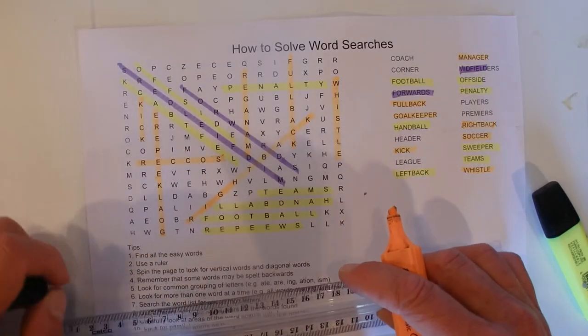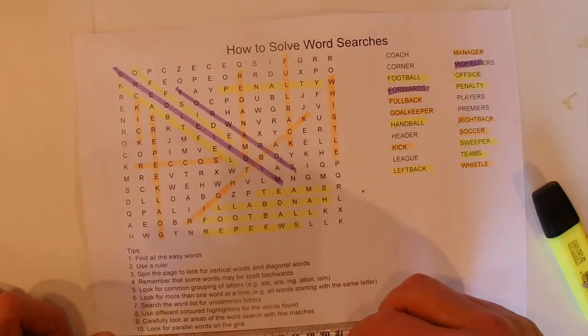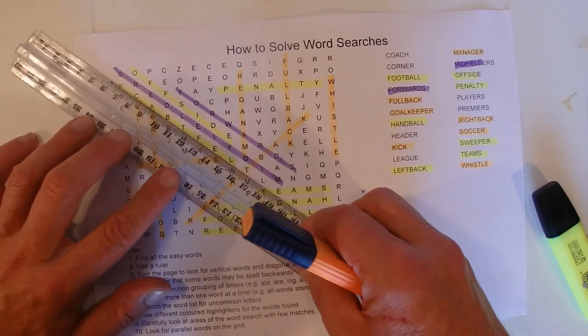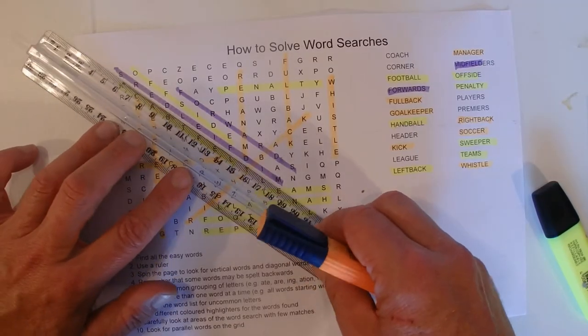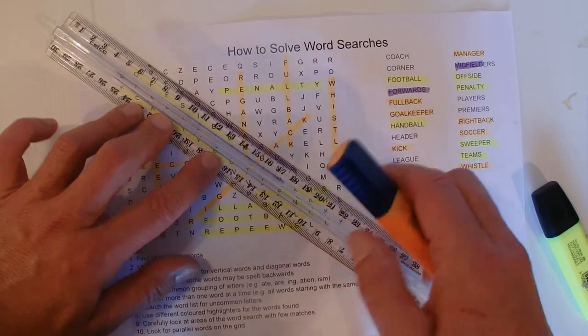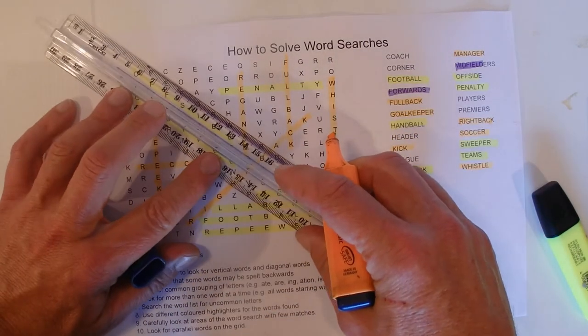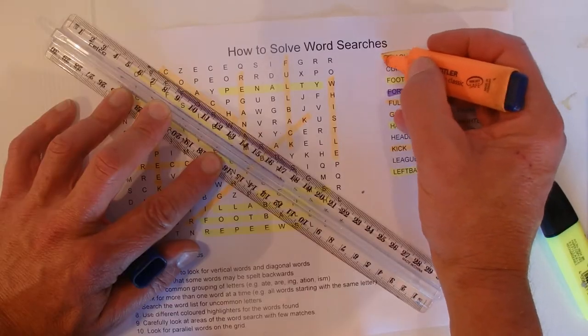And then the last tip is to look for parallel words on the grid. And this often works best on the diagonal. So if you go across there, we've got left back, midfielders, offside, forwards, and, oh, there we go. There's coach, C-O-A-C-H. There's coach, and I'll mark that off there, like that.